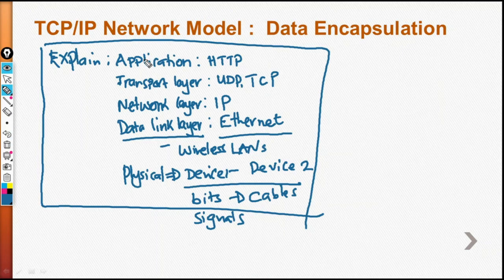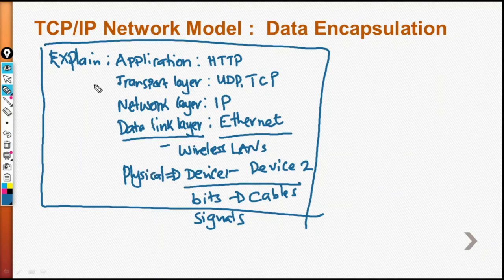You need to understand the interrelationship between each layer. The first thing to know is that the application layer is the beginning — it sends data to the transport layer, then we go to the network layer, data link, and the physical layer. That is when a device is sending data.